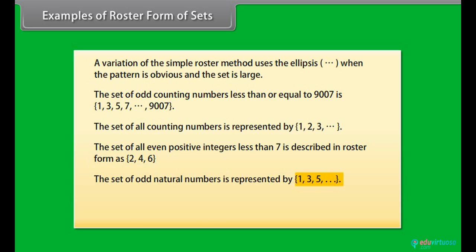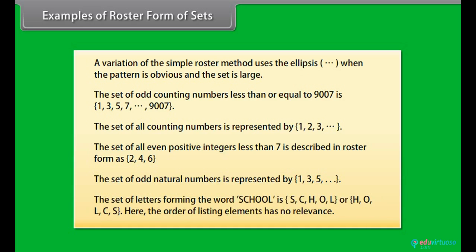The set of odd natural numbers is represented by 1, 3, 5 and so on. The set of letters forming the word school is S, C, H, O, L. Or H, O, L, C, S. Here the order of listing elements has no relevance.